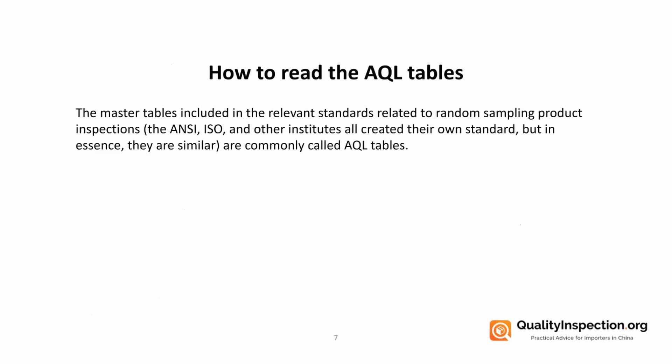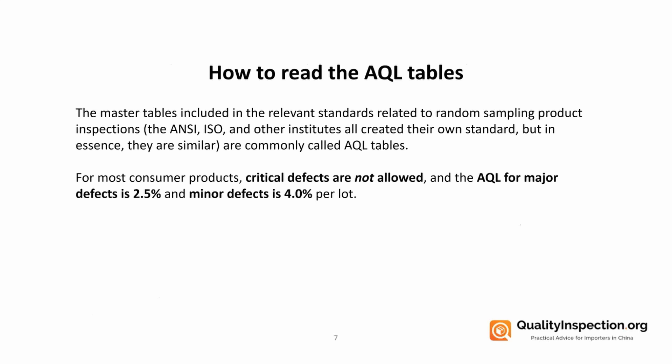Now we move on to the AQL tables — a really simple way to work out your AQL once you know your lot size. These tables are related to random sampling product inspection standards and are commonly called AQL tables. For most consumer products, critical defects will not be allowed in the sample, the AQL for major defects is 2.5%, and for minor defects is 4%.